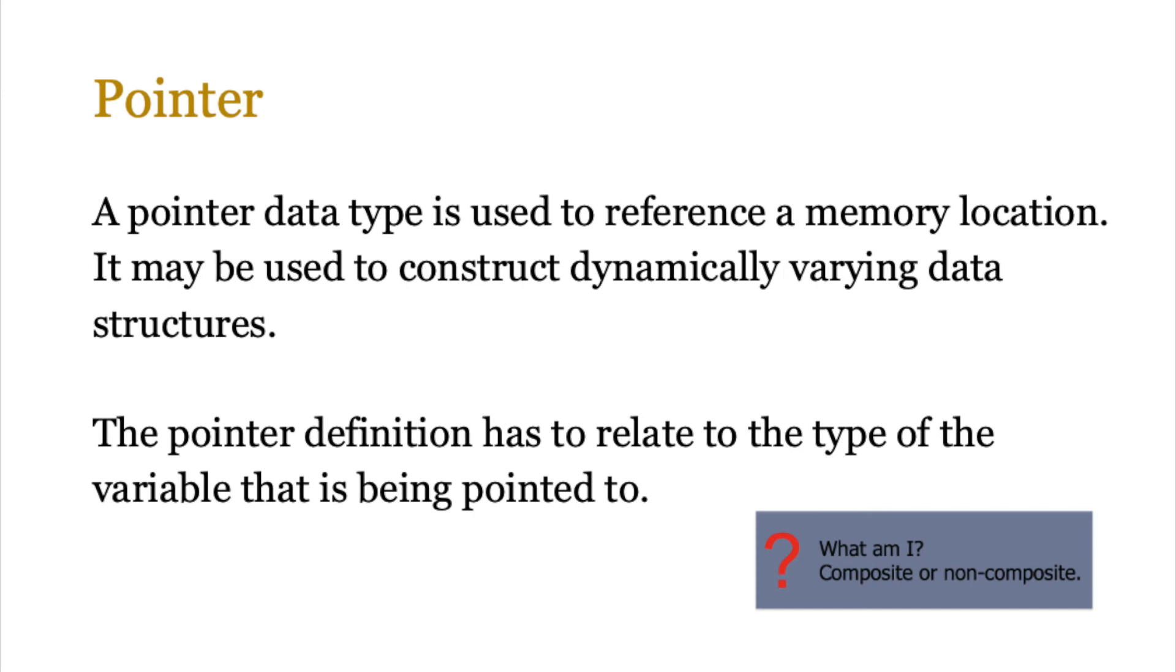Now pointer is a data type which is used to reference a memory location. We use pointers in stacks, queues, linked lists, and a lot of different types of data structures. For us, it's used to construct dynamically varying data structures. Now you know that an array is normally a fixed data structure where you will have a lower bound and an upper bound. But think about stacks, queues, and linked lists, and this is where the pointer needs to be variable. So it needs to change. So the pointer definition has to relate to the type of variable that is being pointed to. So if you're pointing to an integer, then chances are you're probably going to be using the integer data type as well. So what do you think a pointer is? Is it composite or non-composite?